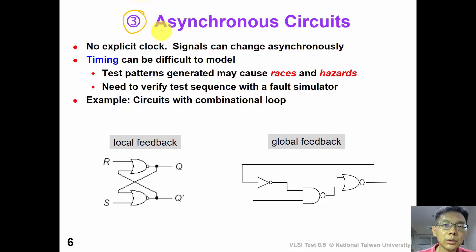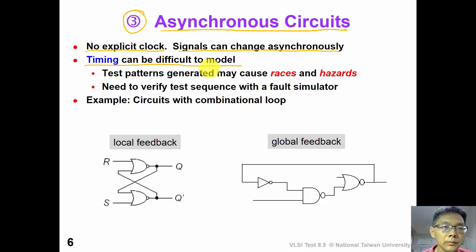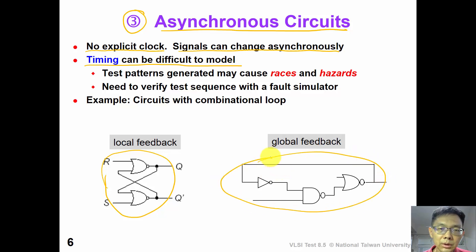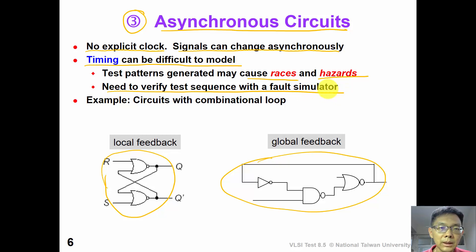The third problem is about asynchronous circuits. An asynchronous circuit does not have an explicit clock, and signals can change asynchronously, so timing is very difficult to handle for sequential ATPG. On the left-hand side, we show a combinational circuit with a local feedback loop, and on the right-hand side, a combinational circuit with a global feedback loop. We can have race conditions or hazards, which are very difficult to handle. So sometimes we need to verify our test sequence with a full simulator so that timing can be carefully handled.